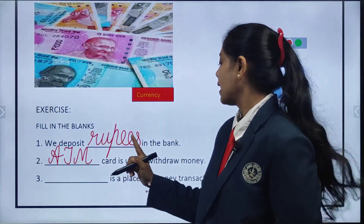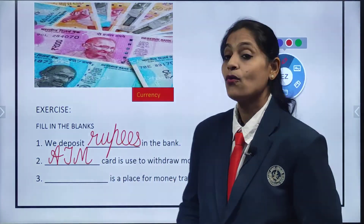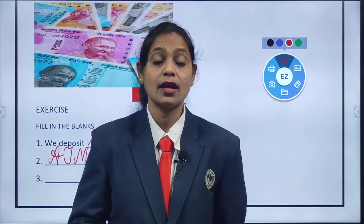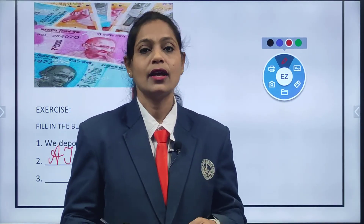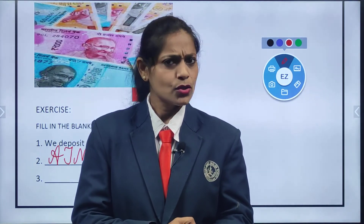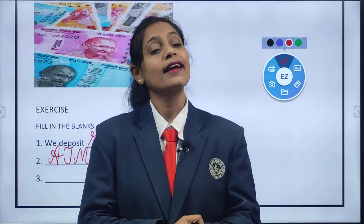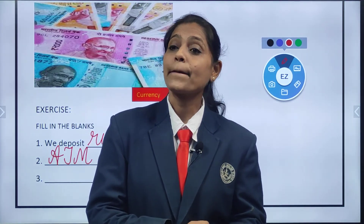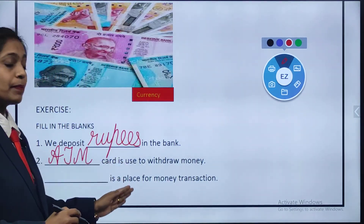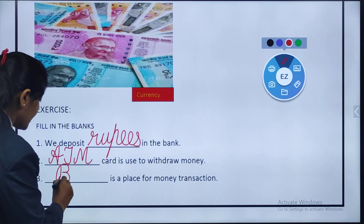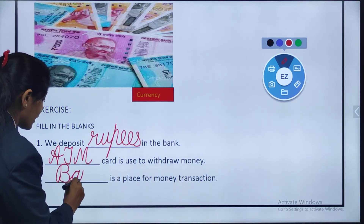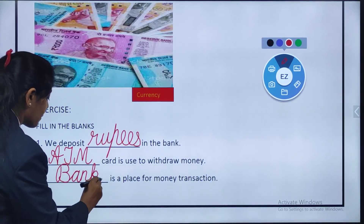And the last blank is: dash is a place for money transaction. Money transaction means anything regarding money, whether to withdraw or to deposit. Which place do we go children? Do we go to a hospital? No. Where do we go then? We go to a bank. So dash is a place for money transaction — what are we going to write there children? Bank. B, A, N, K — bank.